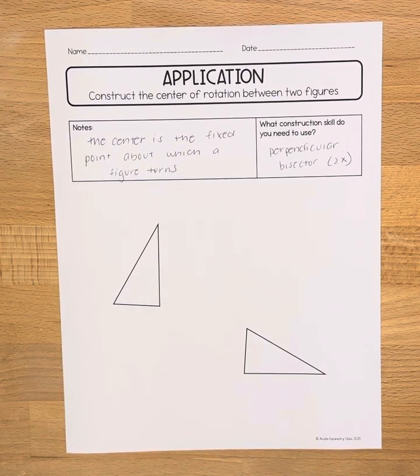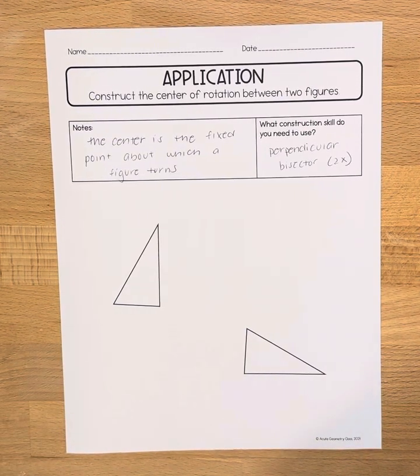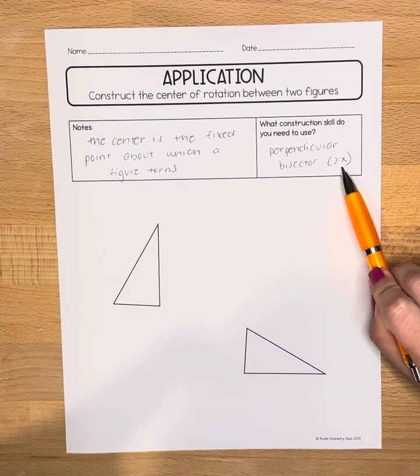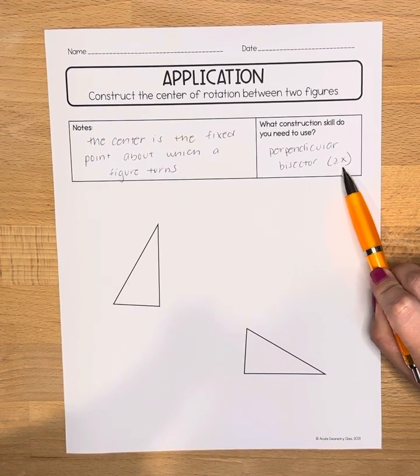And this construction is considered an application of the perpendicular bisector construction. And you'll see that I've noted here we are going to use the perpendicular bisector construction two times.